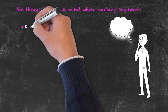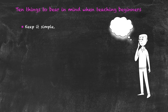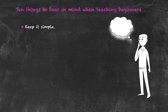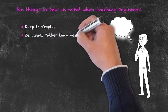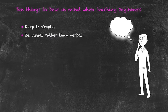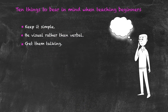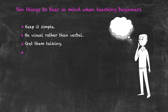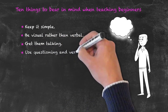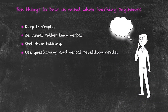First, keep it simple — your language level must be at or just slightly above your students' level, otherwise they won't understand you. One way to reduce language level is to be visual rather than verbal, since visual information is a far easier way to transmit content than talking about it. Get language learners talking as often as possible, as it's through use that they learn quickest. Use questioning and repetition, including repetition drills for pronunciation.